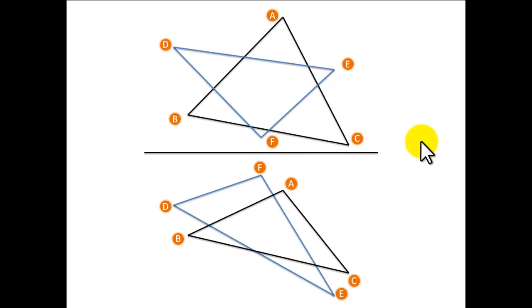In the previous question we were given one point on the line of intersection and we had to find the second point. But in this question we are given no points. So that means we need to find both points on the line of intersection. To solve this we are going to use the exact same method as we did in the previous question.